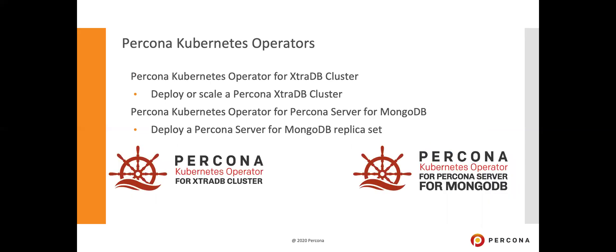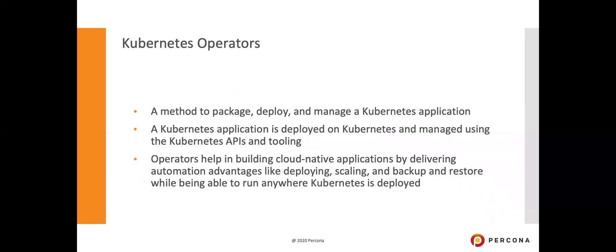Percona has two different Kubernetes operators. The Percona Kubernetes operator for ExtraDB Cluster works with our MySQL clustering solution, and you can use it to deploy or scale up or down a Percona ExtraDB Cluster. The Percona Kubernetes operator for Percona Server for MongoDB lets you deploy a MongoDB replica set. The Kubernetes operator is a way to package, deploy, and manage a Kubernetes application using Kubernetes APIs and tooling, helping build cloud-native applications with consistent environments.